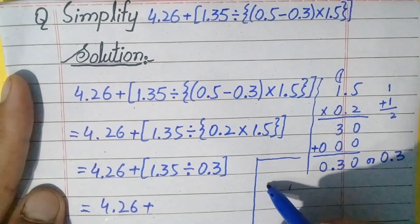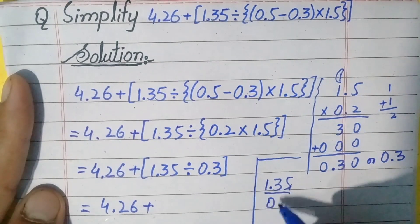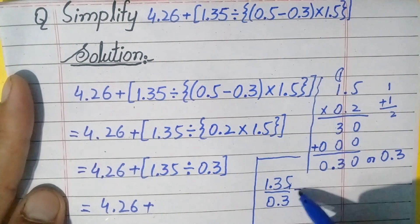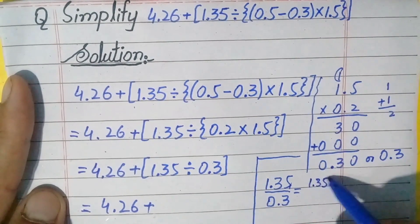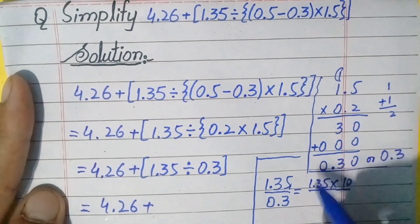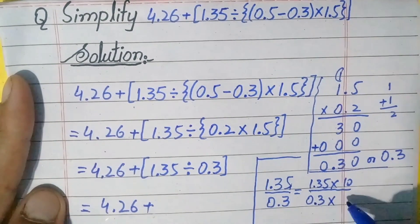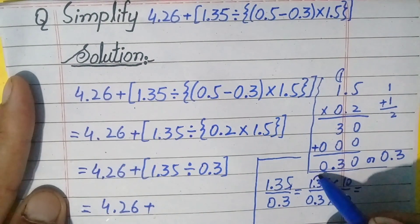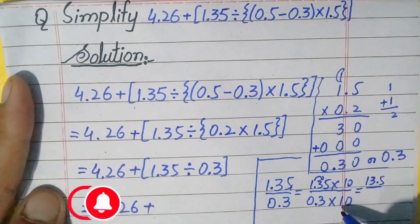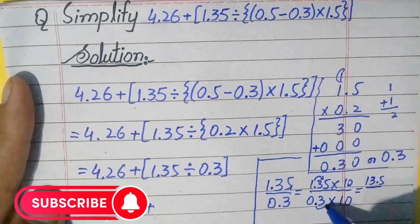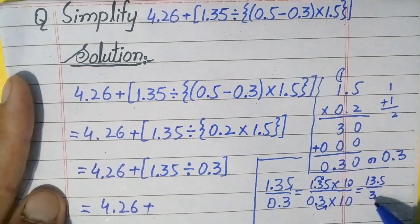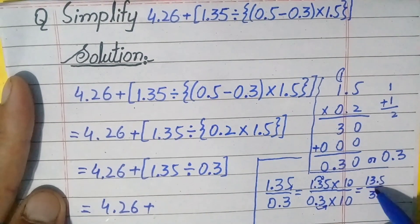This division can be written as 1.35 divided by 0.3. We need to make the denominator a whole number. There is one digit in the decimal part, so we multiply 10 with both numerator and denominator: 1.35 × 10 divided by 0.3 × 10. The point shifts one digit to the right, so 1.35 becomes 13.5, and 0.3 becomes 3. So this division simplifies to 13.5 divided by 3, where the divisor is now a whole number.